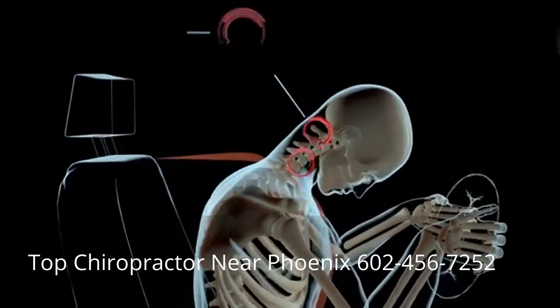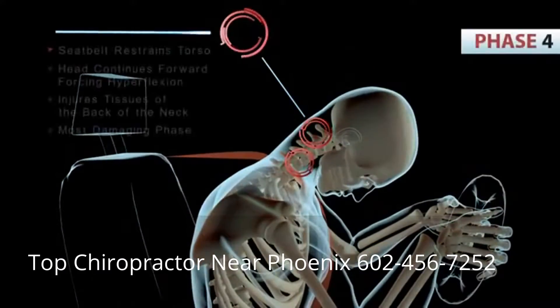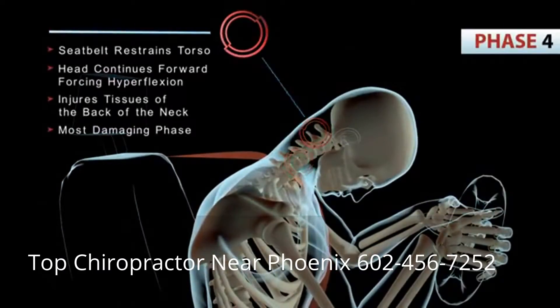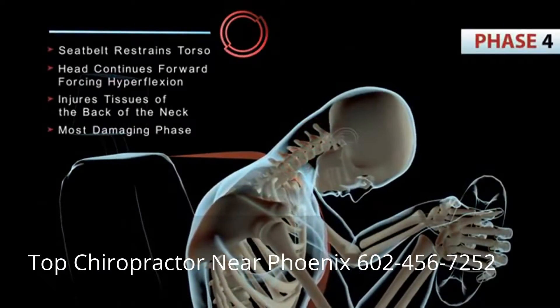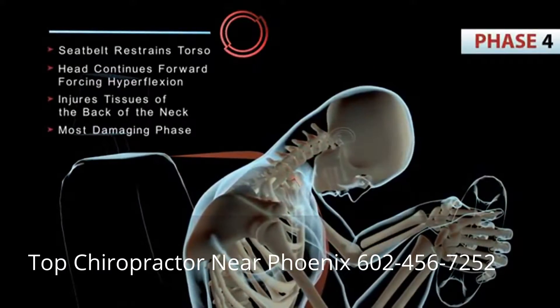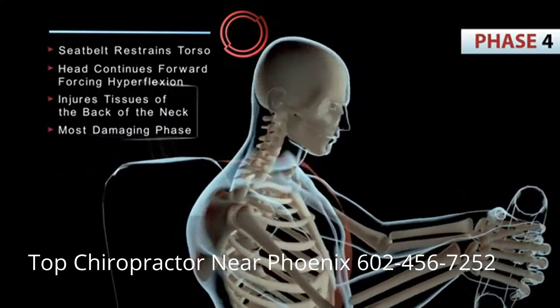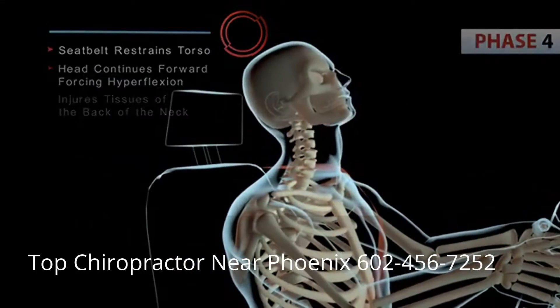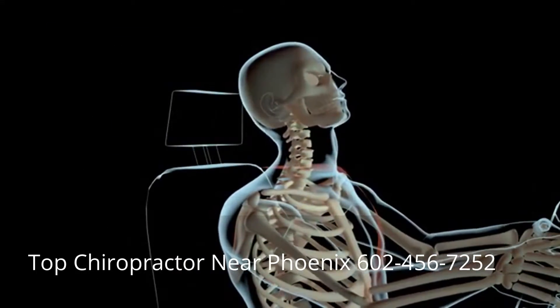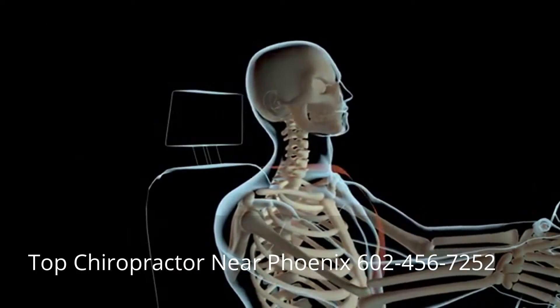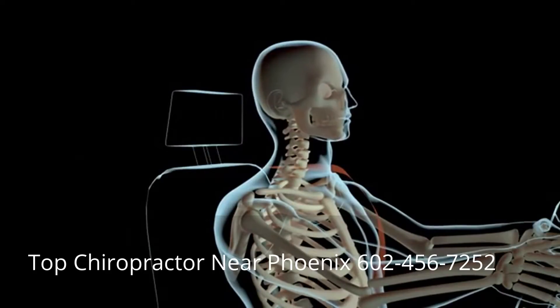In the final phase, the seat belt restrains the torso. The head, however, continues forward, forcing the neck into hyperflexion. This injures the tissues at the back of the neck and is widely considered the most damaging phase.